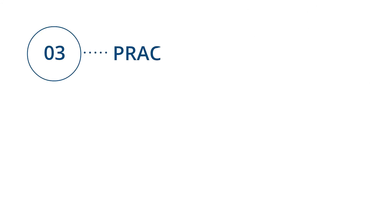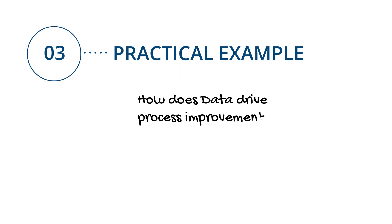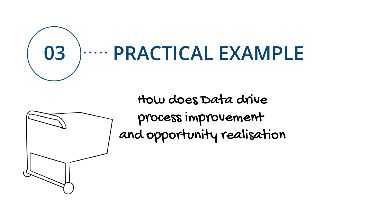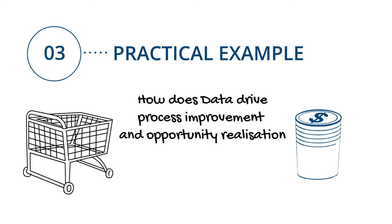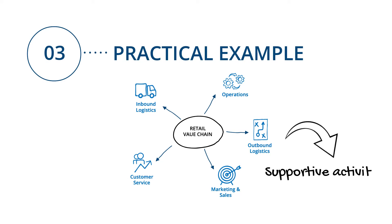In a practical example, how does data drive process improvement and opportunity realisation? Let's look at the retail value chain. There are a number of primary activities: inbound logistics, operations, outbound logistics, marketing and sales, and customer service. And within each of these functions we have sub-activities, all of which need data to drive them.